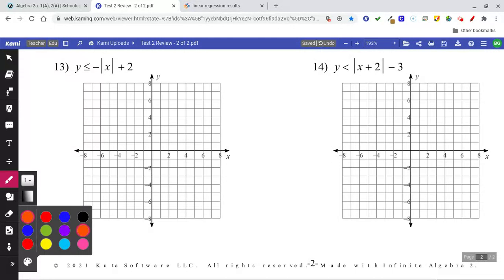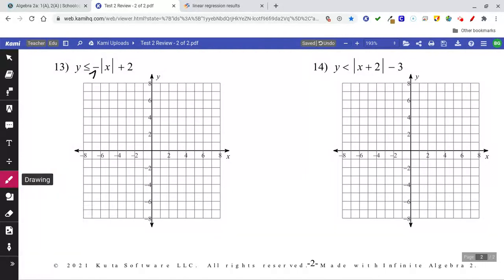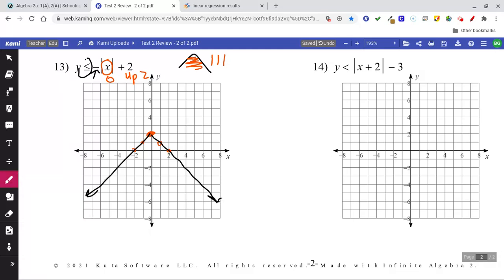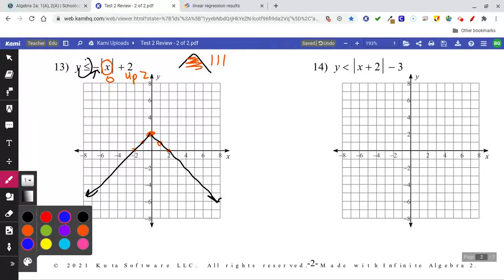Numbers 13 and 14 both look like absolute value graphs. We can see that number 13 has a flip, and this says it's going to be solid and shade less than, so shade down. So there is no left-right shift. Remember, I always think about what makes this 0, and in this case it is 0, and this means up 2. So all we're doing is shifting up 2. We've got a flipped absolute value. Remember, absolute value has a 1, 1, 1 pattern. So down 1, down 1. Looks like that. Solid line, shade less than, so shade down.